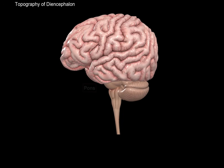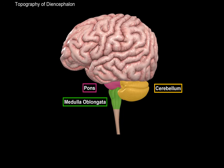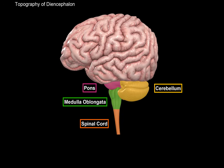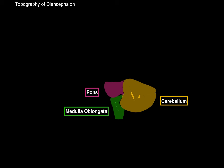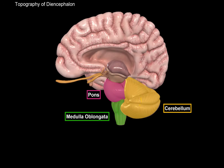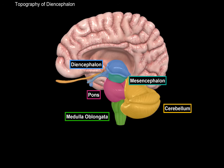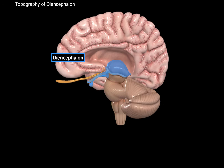Here we see pons, medulla, cerebellum, and the spinal cord. If we remove one side of the hemisphere, we will be able to see the midbrain. And right above the midbrain, we have our diencephalon. The diencephalon is a group of nerve nuclei that surrounds the third ventricle.